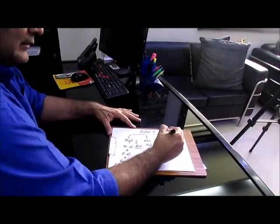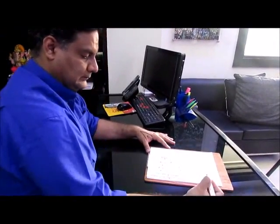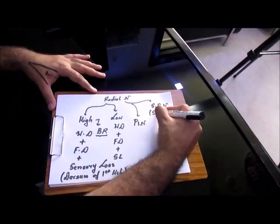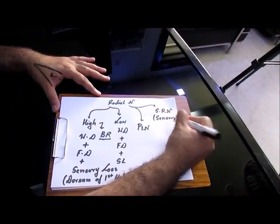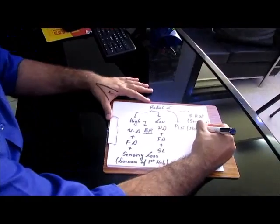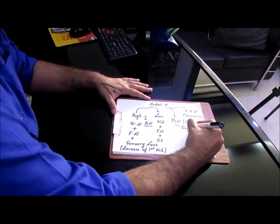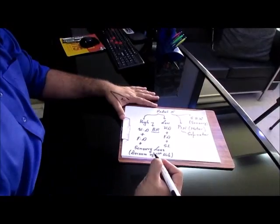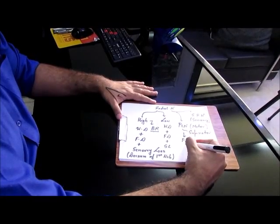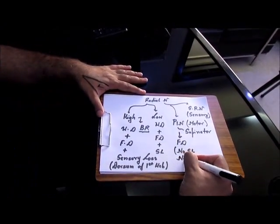Then, Radial Nerve divides into two parts. Posterior Interosseous Nerve and Superficial Radial Nerve. This is principally the sensory branch supplying this area. This is a Motor Nerve. Posterior Interosseous Nerve pierces a muscle called as Supinator and its Palsy causes finger drop, no sensory loss, no wrist drop.